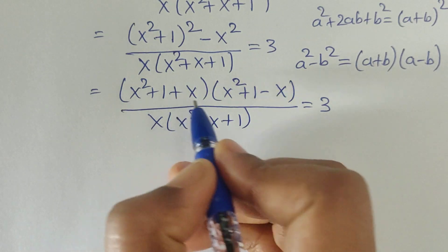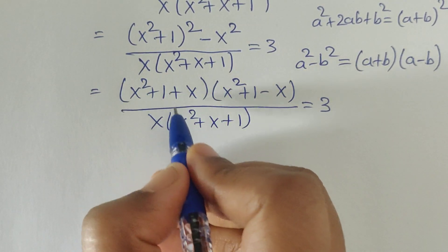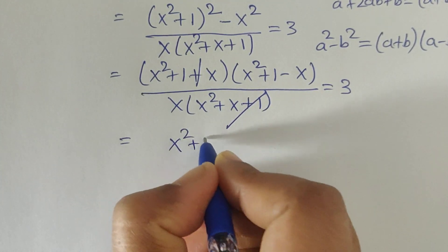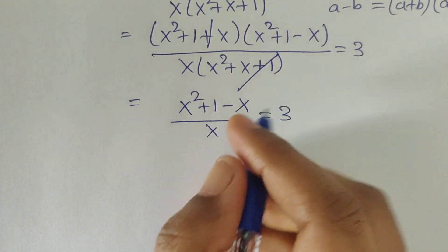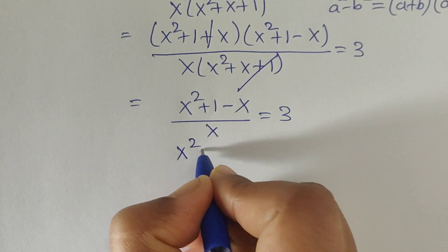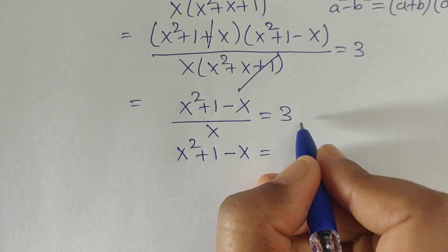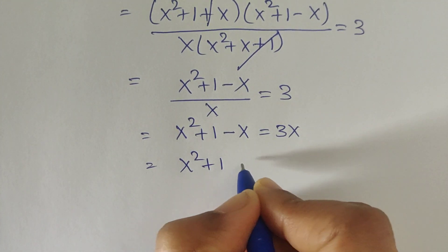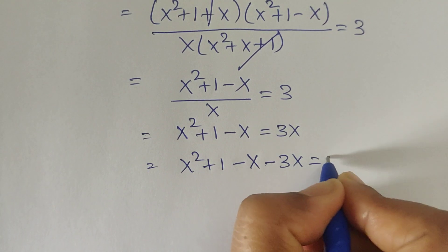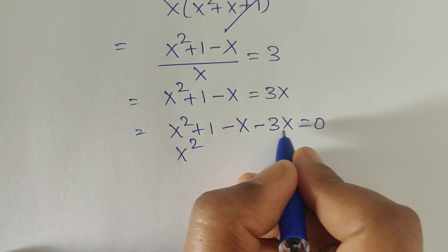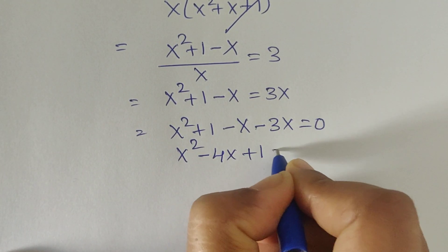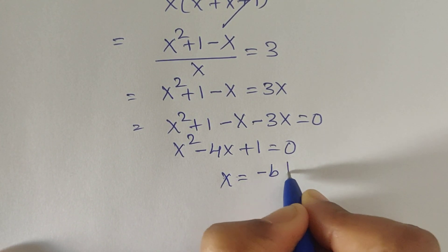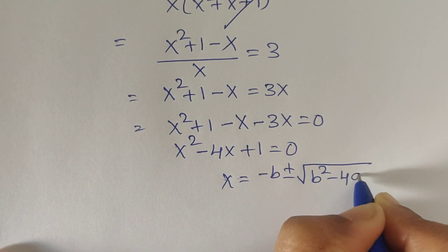In the numerator and denominator we have the same term x square plus x plus 1, since x square plus 1 plus x equals x square plus x plus 1. So we cancel these two terms and get x square plus 1 minus x, divided by x, equal to 3. Multiplying both sides by x gives x square plus 1 minus x equals 3x. Moving 3x to the left side: x square minus x minus 3x plus 1 equals 0, which simplifies to x square minus 4x plus 1 equals 0. This is a quadratic equation, so we apply the quadratic formula: x equals minus b plus or minus square root of b square minus 4ac, divided by 2a.